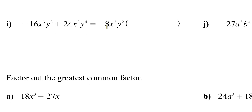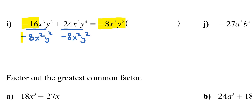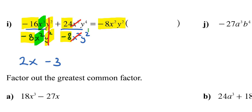For letter I, the GCF is -8x²y². Dividing: -16 ÷ 8 = positive 2, x³ ÷ x² = x, and the y²'s cancel, giving 2x. Then 24 ÷ (-8) = -3, the x²'s cancel, and y⁴ ÷ y² = y². So the final answer is 2x minus 3y².